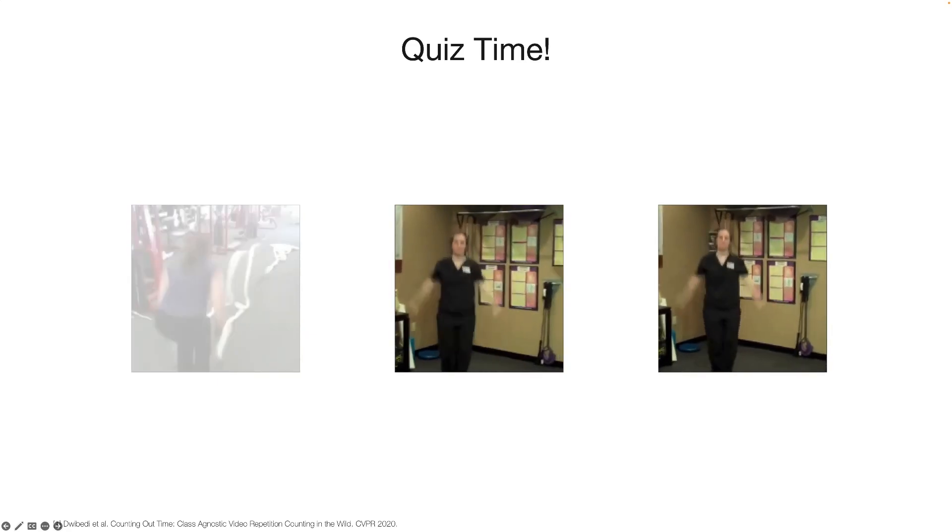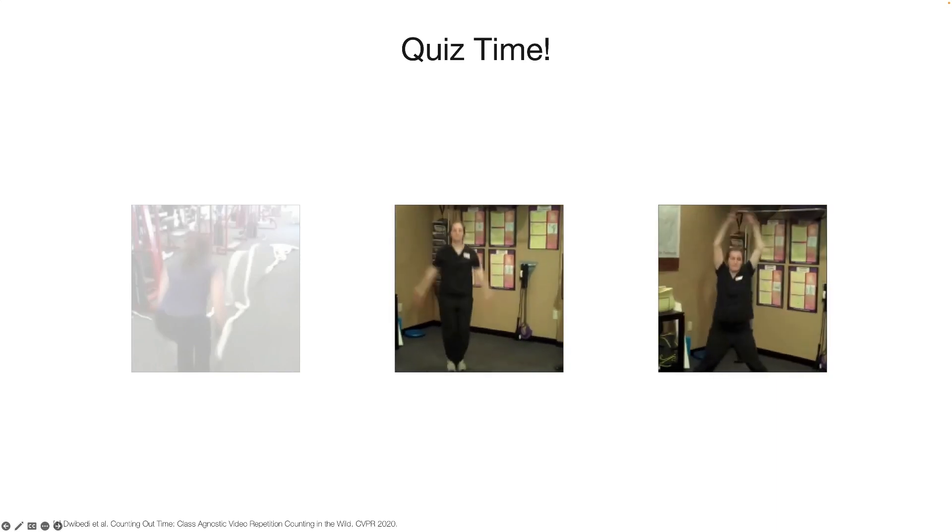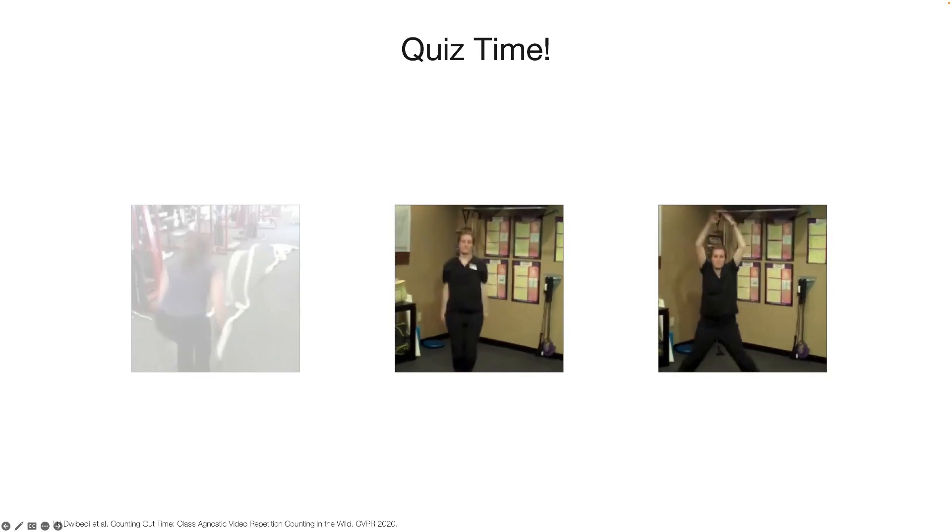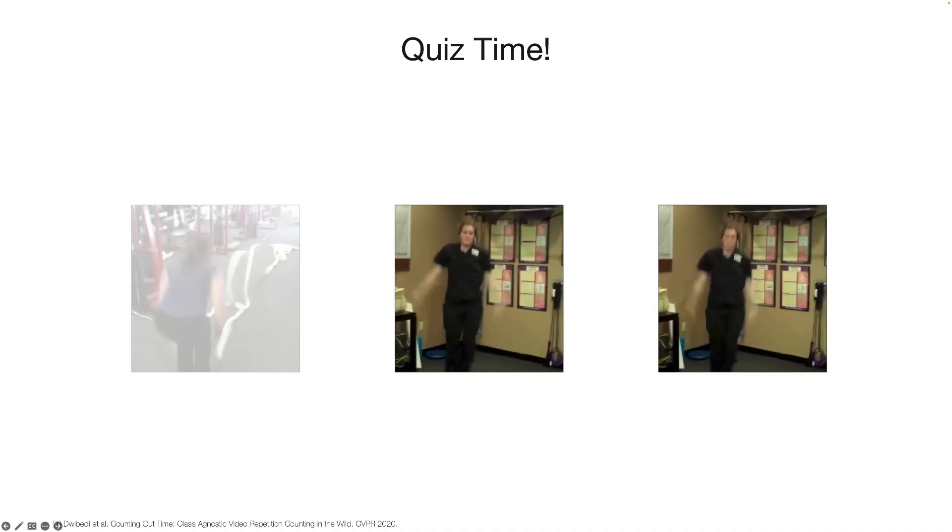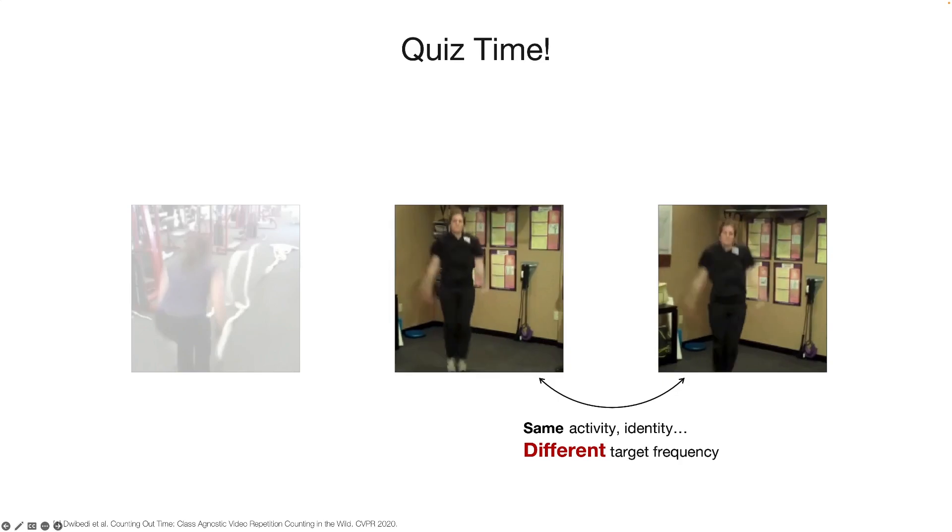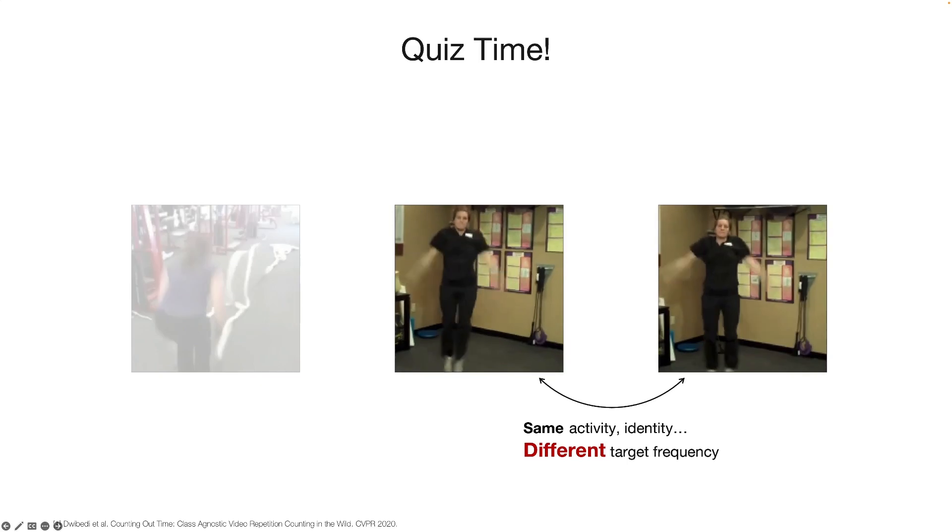It is easier to see now that the two videos exhibit different activity frequencies. Although you might not know the exact speed in the original video, we can still identify that the two videos have different frequencies, as the third video is a slower version of the middle one, despite them being exactly the same in activity and identity.